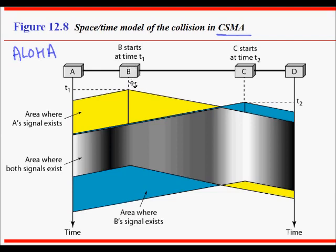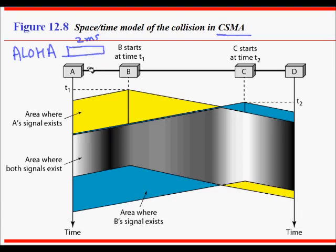Without considering possible collisions, if A starts to send a frame which takes say two milliseconds, and during this period B, C, or D starts transmitting, there will be a collision and both frames will be destroyed. Because no one senses the medium, there is a lot of collision and throughput decreases.